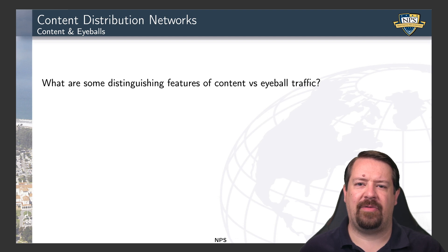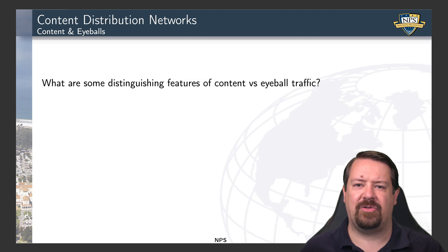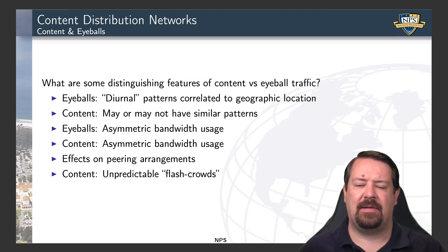First, a reminder that we have different types of edge networks, some of which cater to serving content, and other edge networks cater to serving end users. These are commonly called content networks versus eyeball networks, where the eyeballs are the end users that are viewing the content. We can make some generalizations about these different types of networks.